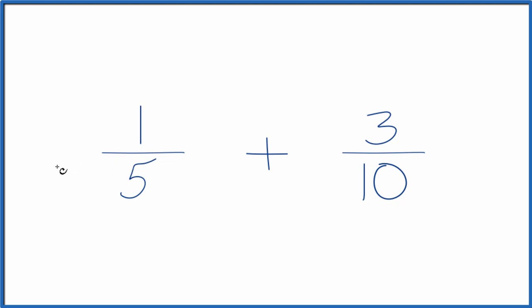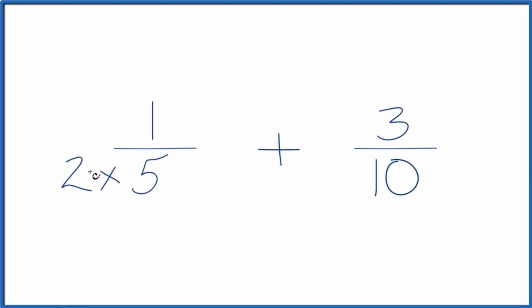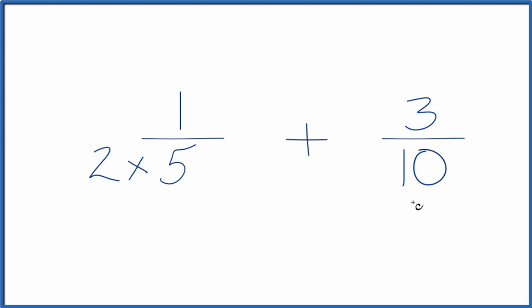Why don't we do this? Why don't we multiply two times five? Because two times five, that's ten. That would give us the same denominator.